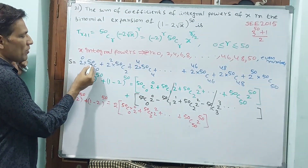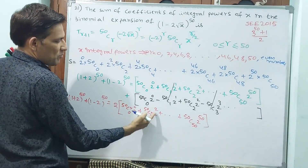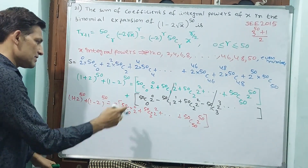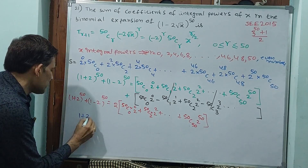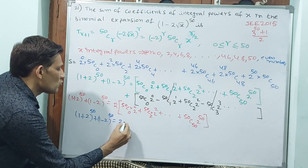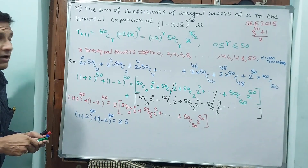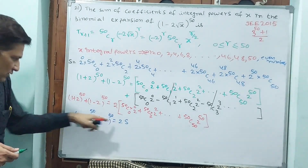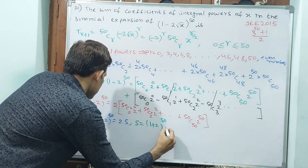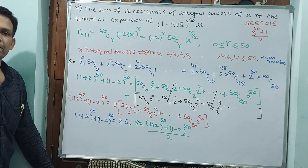So our required sum S = [(1 + 2)^50 + (1 − 2)^50] / 2.